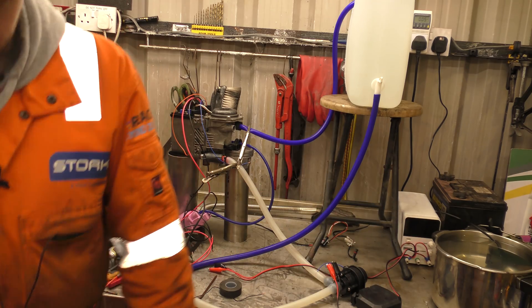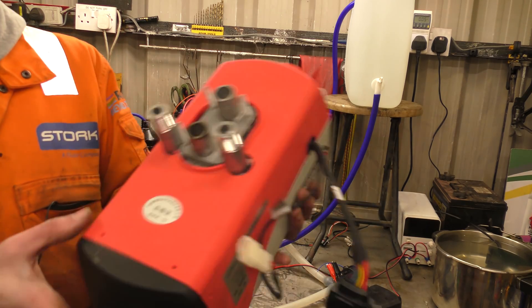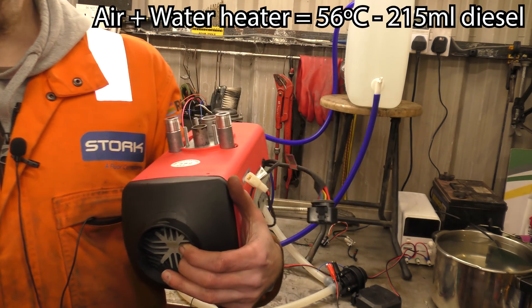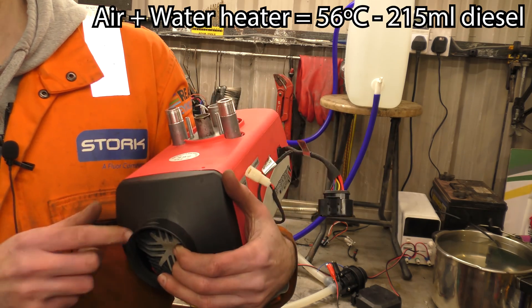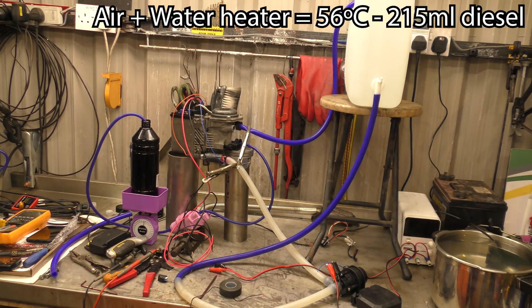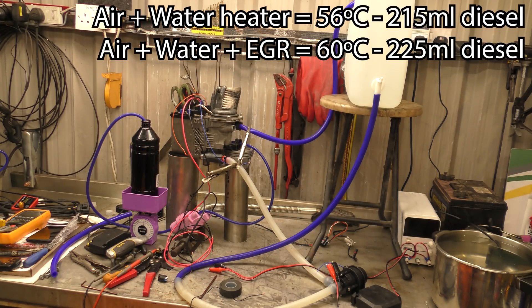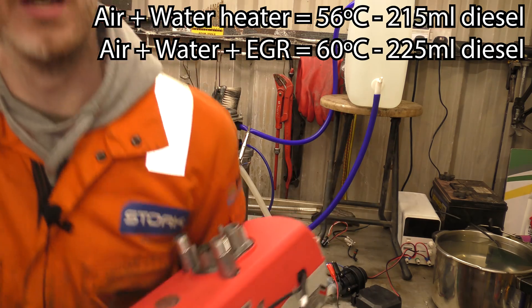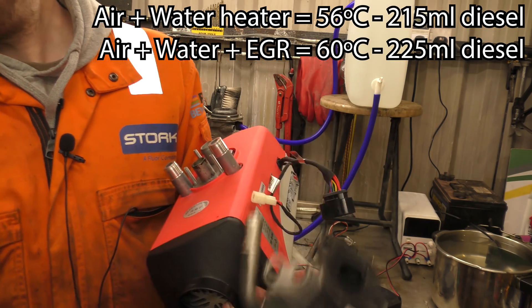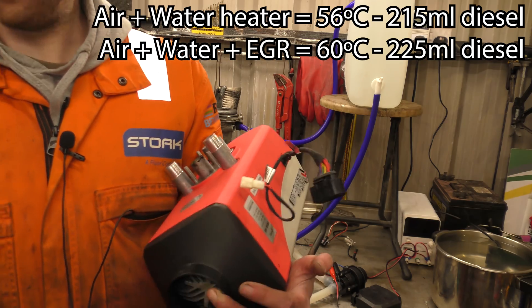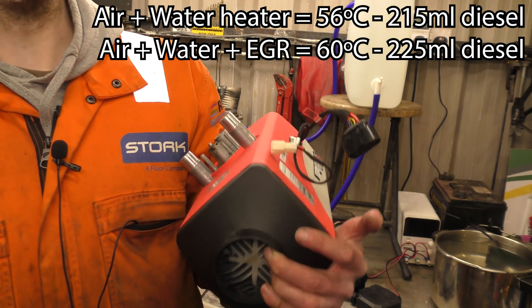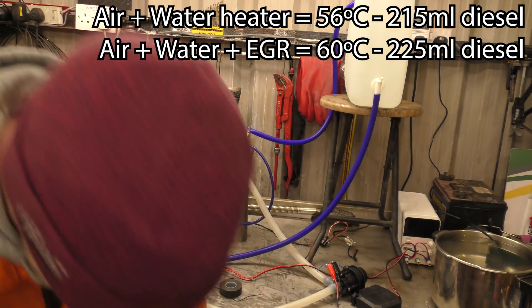Let's go through what happened with the other heaters. So, the Chinese diesel heater, by itself, raised 10 litres of water in 30 minutes by 56 degrees, and used 215 millilitres of diesel to do it. Next up was the diesel heater, plus the EGR cooler, and that raised 10 litres of water in 30 minutes by 60 degrees, and used 225 millilitres of fuel. I expected that to be more, and yet, it was not.